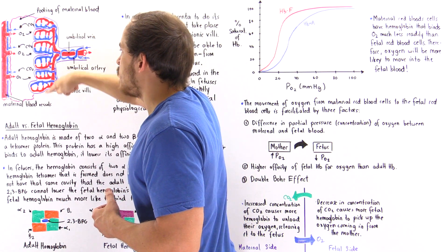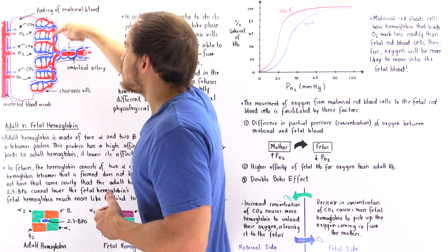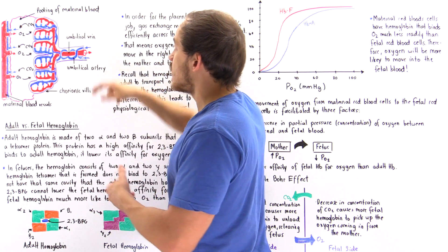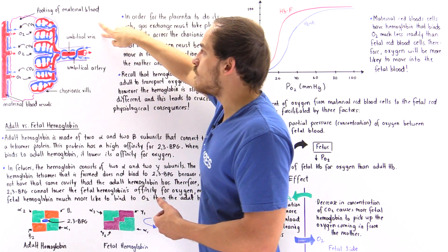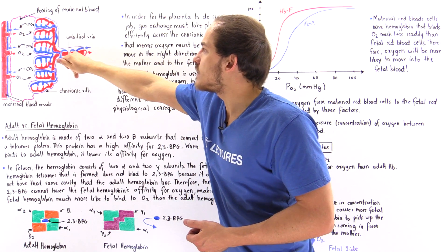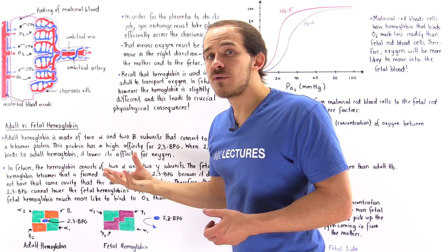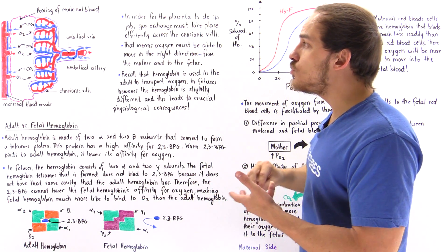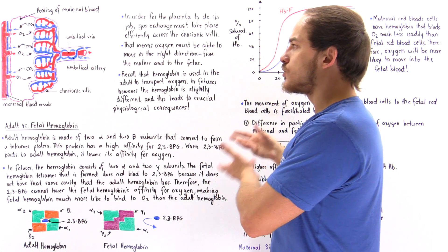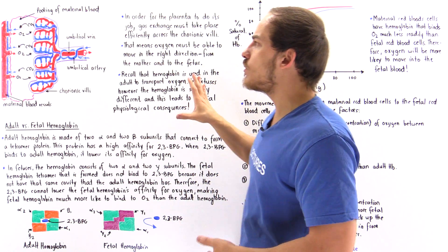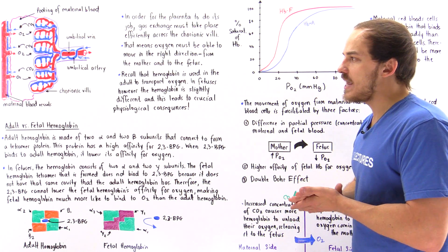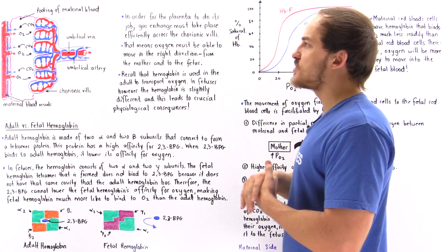When oxygen is picked up, it is taken up by blood vessels that connect to the umbilical vein. The umbilical vein — shown in red — carries the oxygenated and nutrient-filled blood to the organs, tissues, and structures found within the developing fetus. This is how gas exchange actually takes place.